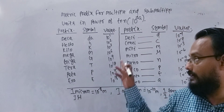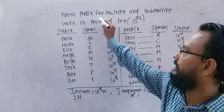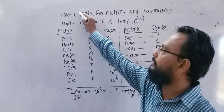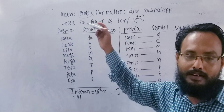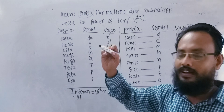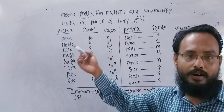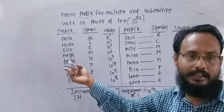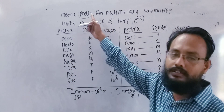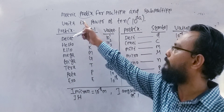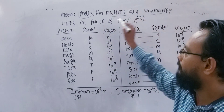See the table. One like you will become a prefix. Prefix is like three. This is called prefix. Prefix for multiple and sub-multiple units.